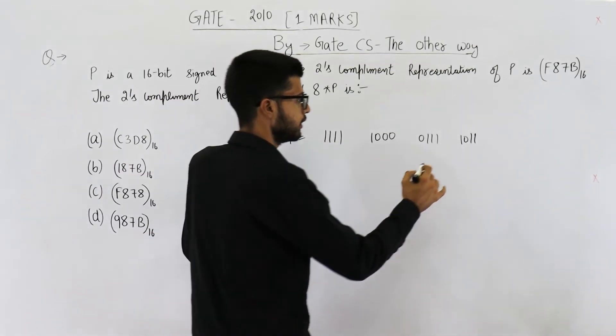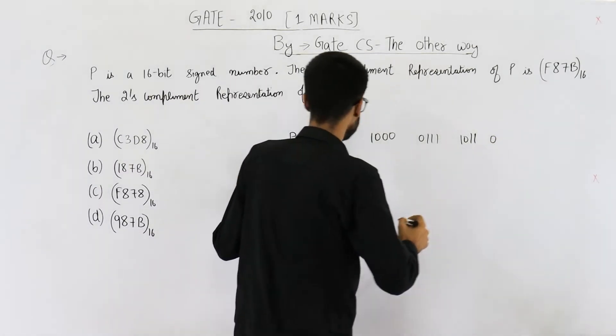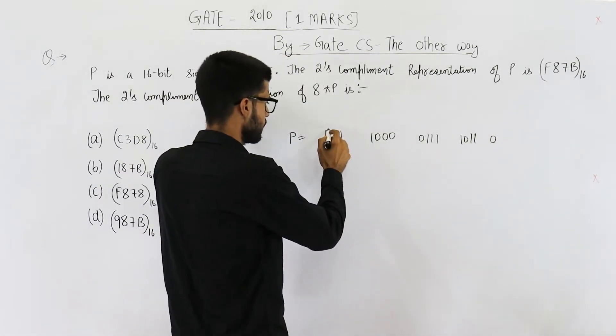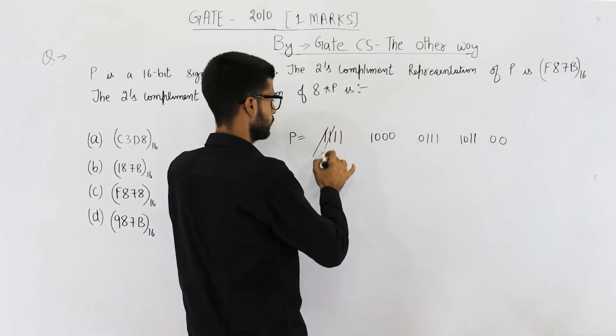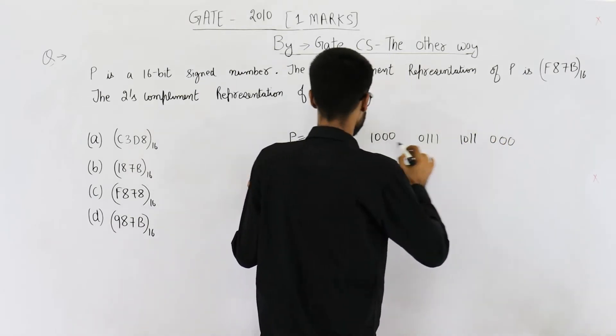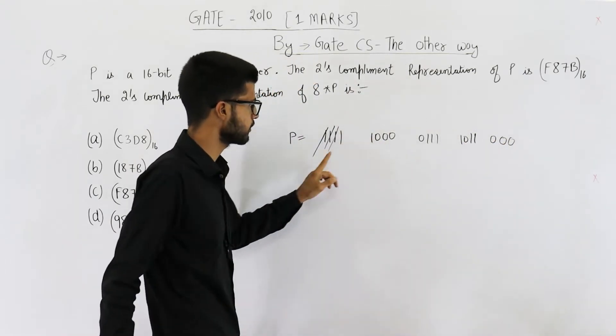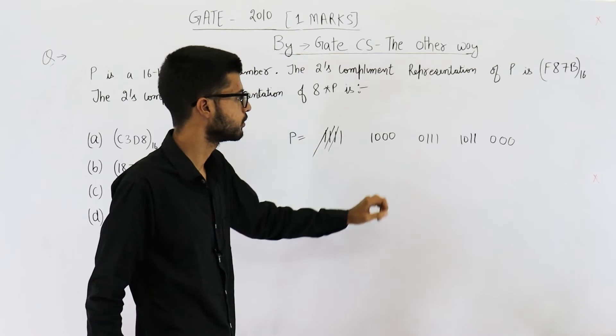So multiply it by 2. I am adding a 0 and this one is neglected. Then again multiplying it by 2. So our answer is 1, 1, triple 0 and so on.